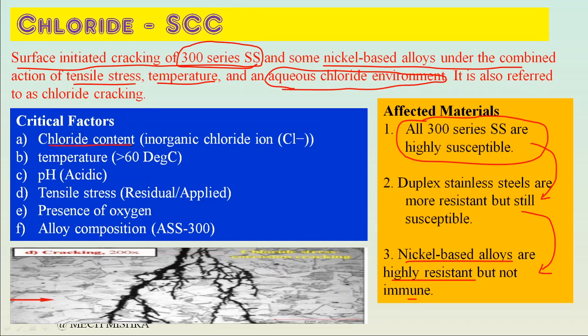What are the critical factors for CLSCC to occur? First is chloride content. If there is a high chloride concentration, there is a very high probability of CLSCC. But even a small amount of chloride - even 1 ppm - is capable of causing stress corrosion cracking at higher temperatures. The chloride free in ionic form (inorganic chloride, available as Cl⁻) is responsible for CLSCC because these are the reactive chlorides. Organic chlorides do not cause immediate CLSCC but can sometimes be responsible for it.